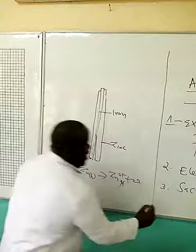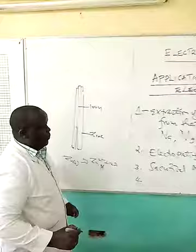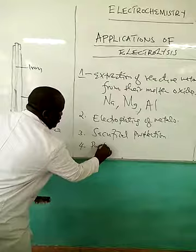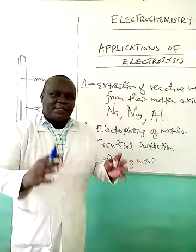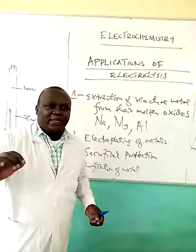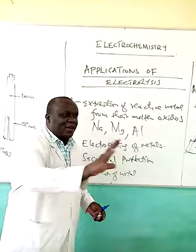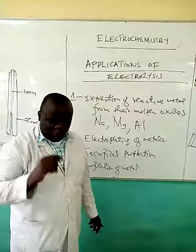Another application, number four, is purification of metals. We learned that copper can be purified through electrolysis. You put the impure copper at the anode and the pure copper at the cathode. The copper ions are attracted to the cathode, where they pick up electrons and form copper atoms that are deposited, giving you pure copper. That is what was covered in the previous lesson. Thank you.